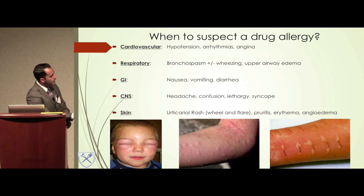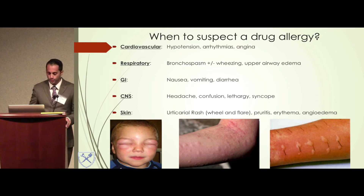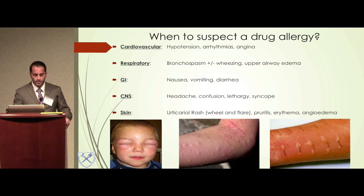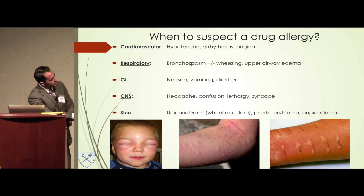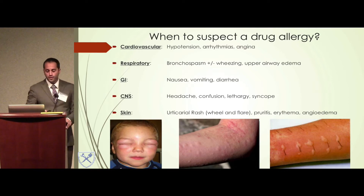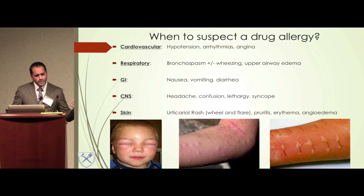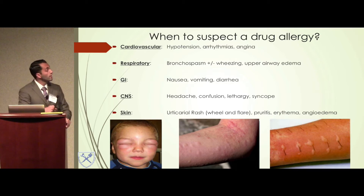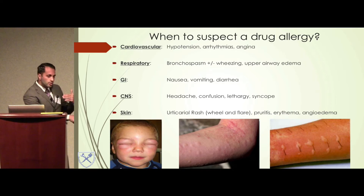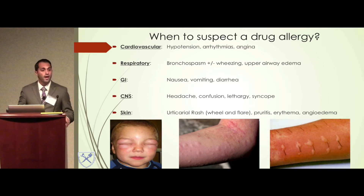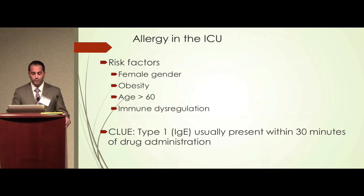The real kicker is the skin manifestations — the classic wheal and flare. Here's the wheal surrounded by the flare. This is a patient who received cefazolin and developed a wheal and flare response. This is what penicillin skin testing looks like: patients who received either the major or the minor determinant classically develop a wheal and flare surrounded by edema. These skin manifestations make diagnosis easier, but the patient doesn't have to have them — they only need one of these signs.